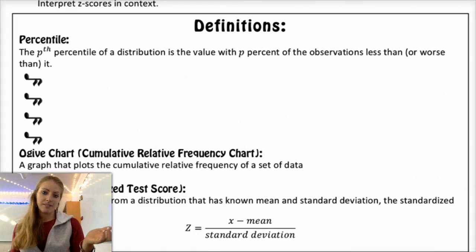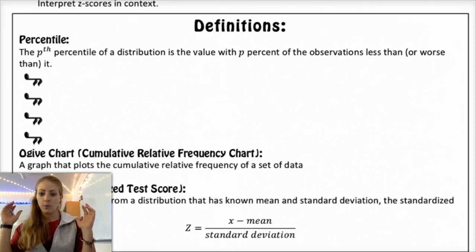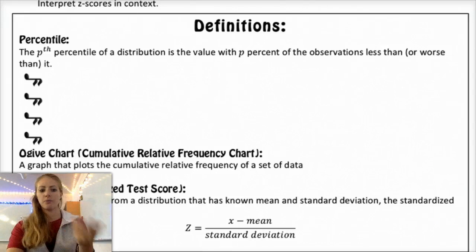If you're racing and you're looking at times, if you are in the 80th percentile for times, you're actually going to have a lower time than other people because having a low time is a good thing in racing. So you want to be careful about the context of the problem. Basically, percentile gives you the percent of people who are worse or lower than that particular score.